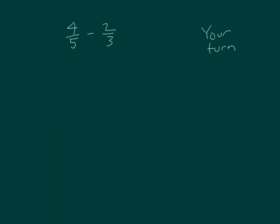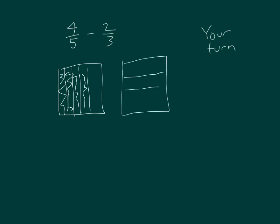Your turn with 4 fifths minus 2 thirds. Modeling 4 fifths and 2 thirds. Getting some equivalent fractions. This was 4 fifths.